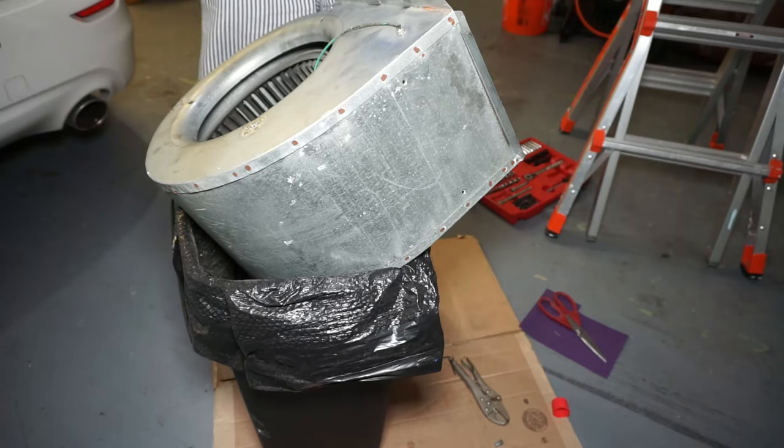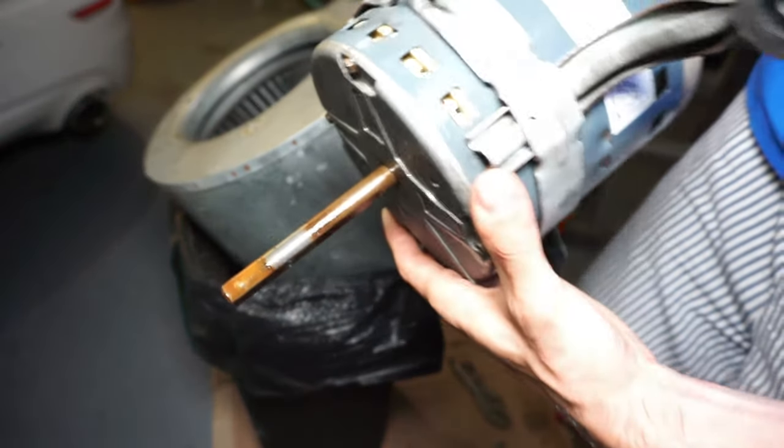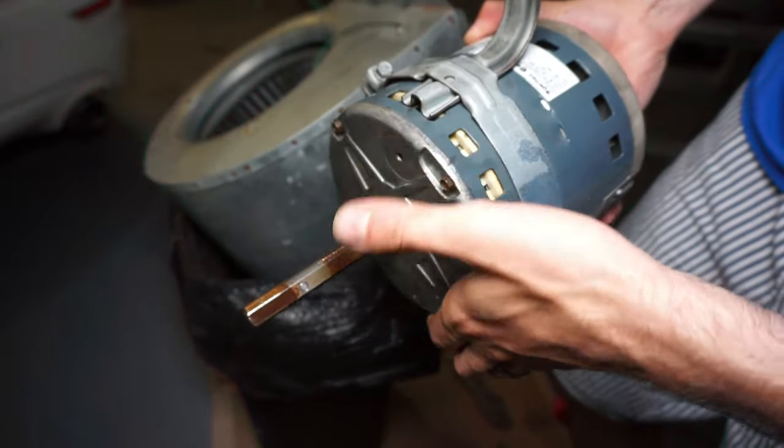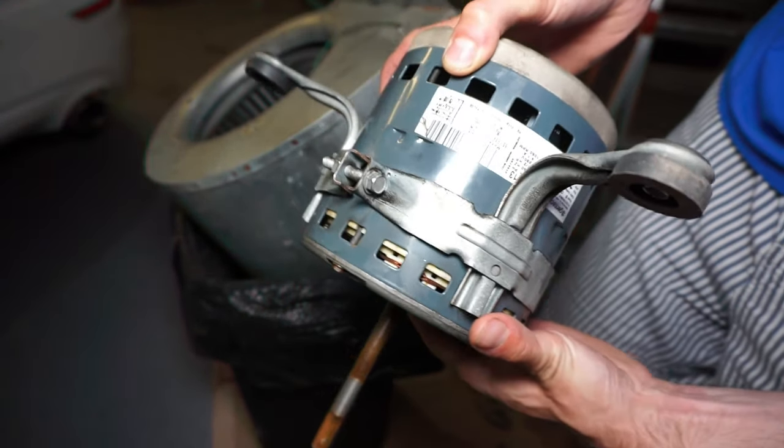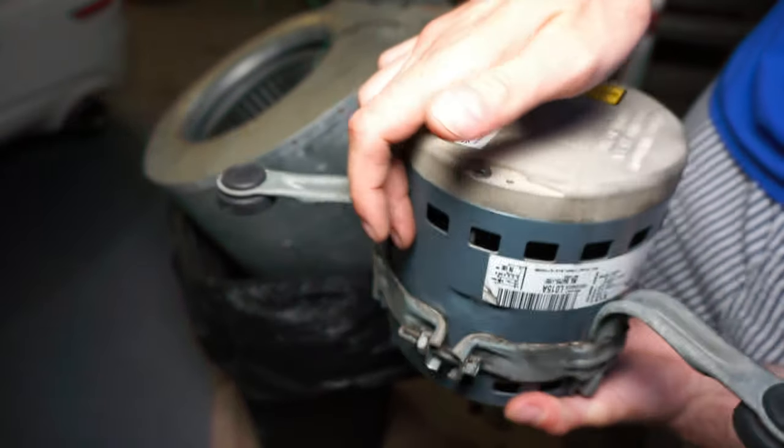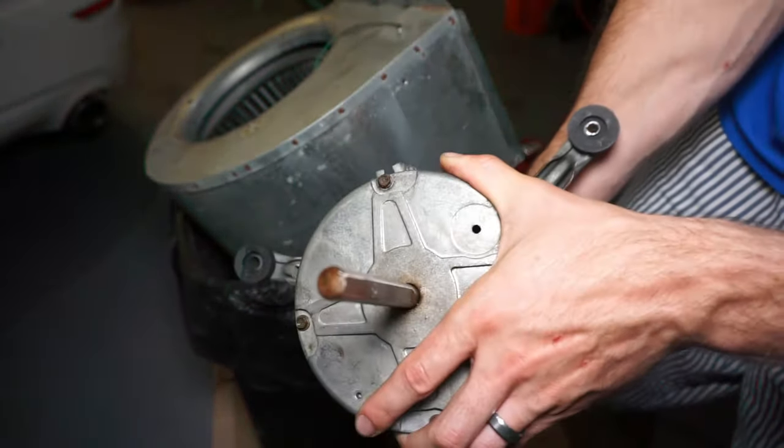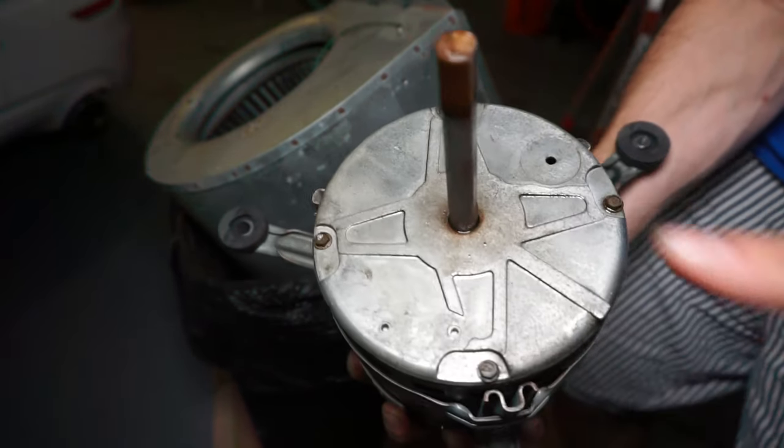Alright. Well, there it is. There's the old motor. As you can see, it's pretty rusted for exactly where the fan blade was, but basically we're just going to take this off, take the belt off, put that on the new one, mount the new one back in there, and then we'll put it back in the air handler. So stay tuned.